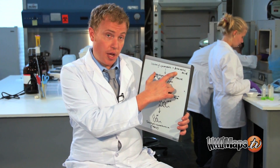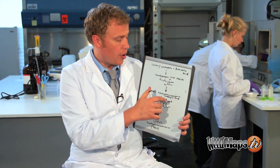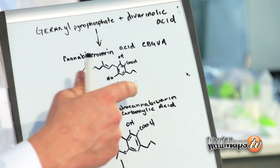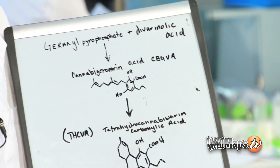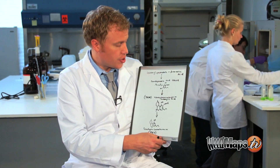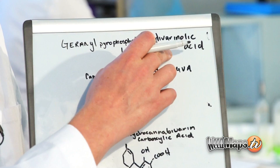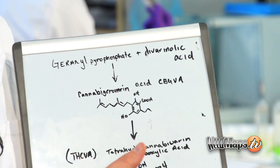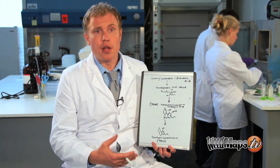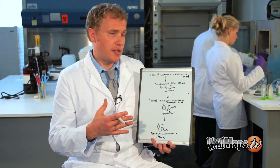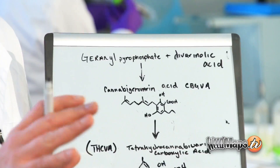Most of the cannabinoids that we've all heard of — THC, CBD, CBC — start from a combination of geranyl pyrophosphate and olivetolic acid. Whereas THCV starts with divarinolic acid, and the only difference is that divarinolic acid has two fewer carbons than olivetolic acid. So it's different in that one of the two starting materials is slightly different.